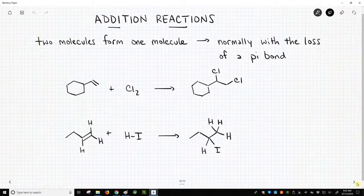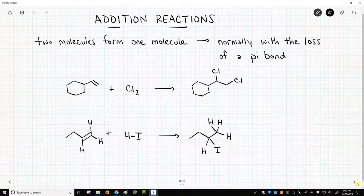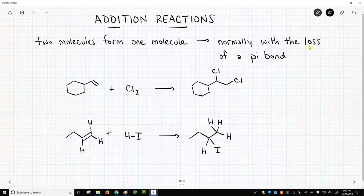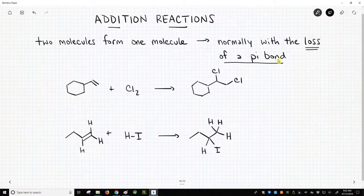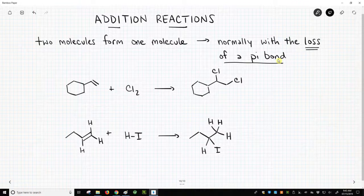So in addition reactions, two molecules come together to form a new molecule. And when this occurs, almost always it is accompanied with the loss of a pi bond. So addition reactions are the opposite of elimination reactions. In elimination reactions, we form a new pi bond. In an addition reaction, we lose a pi bond.